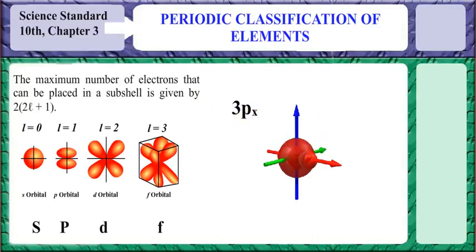The maximum number of electrons that can be placed in a subshell is given by 2 into 2L plus 1.